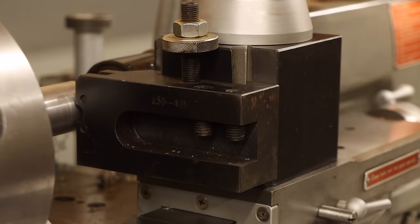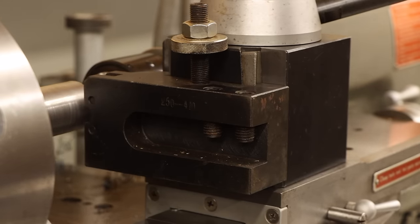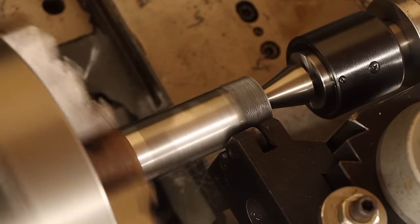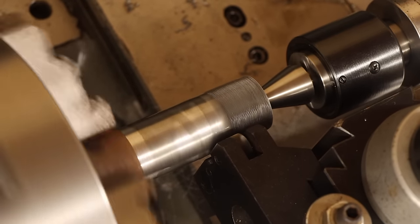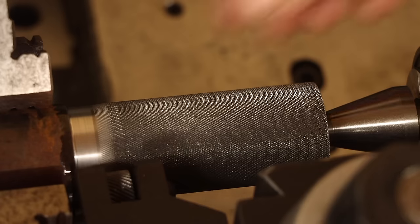Switching to the knurling tool, I'll set the height by pressing it against the diameter before locking the tool post, and then power feed my way across the length, stopping periodically to verify the pattern is staying consistent, and even more importantly, grippy.